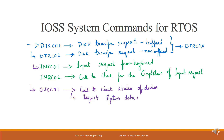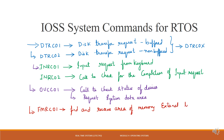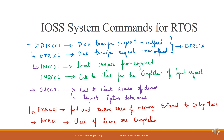The general form of this command is OUCC0X. We also have FMRC01, which stands for find and reserve an area of memory external to the calling task. Similarly, RMRC01 is a command used to check if scans are completed. These are the various IOSS system commands for RTOS.